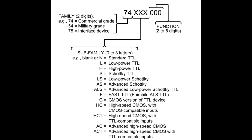In the numbering system, the middle section is called the subfamily, and there can be up to three letters in it. Something like a 74HC04 would be an inverter in the HC family. The function is the last two or three digits — like 7404 has two digits, 7414 has two digits, 74374 has three digits. It can actually go up to five digits; there are a lot of functions these days.